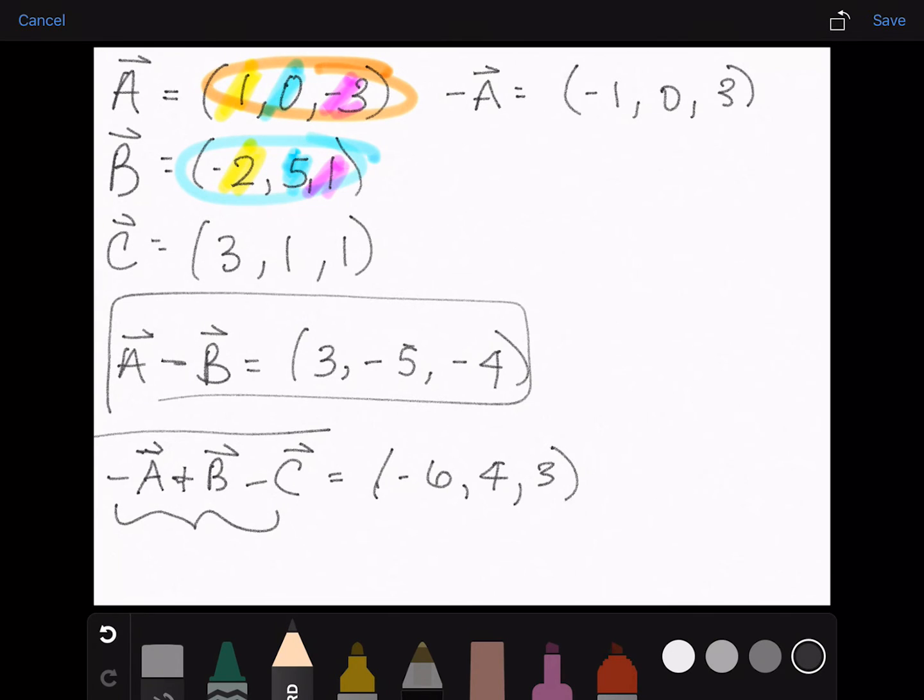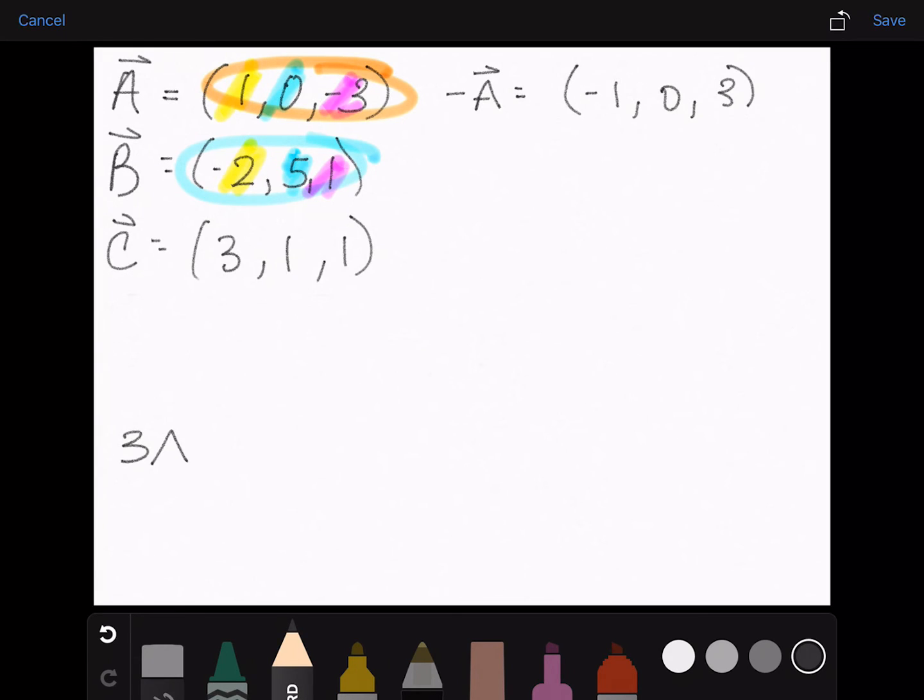So this is what this vector will look like. Let's do one more: 3A minus 2C.